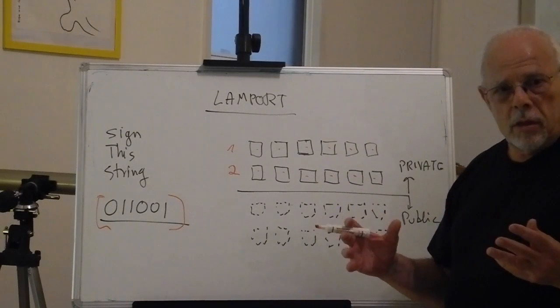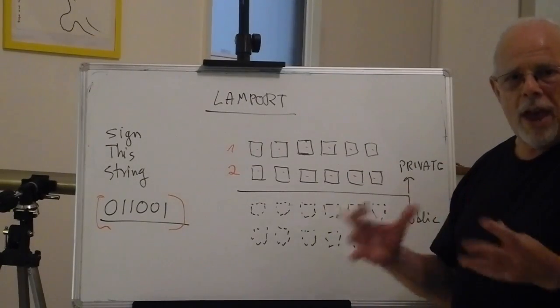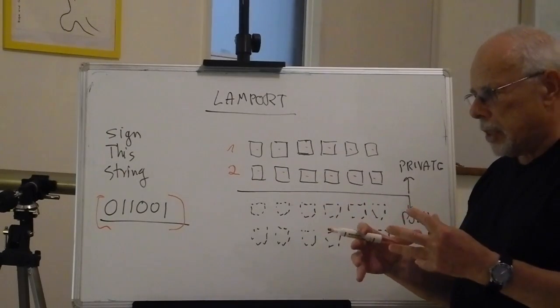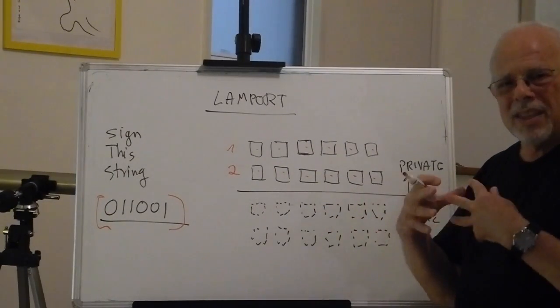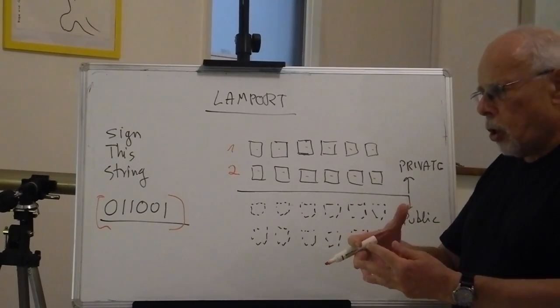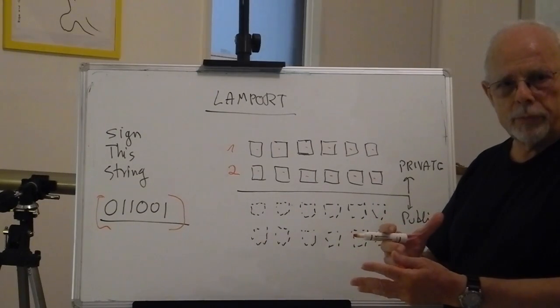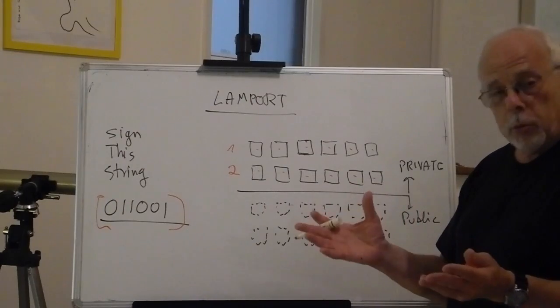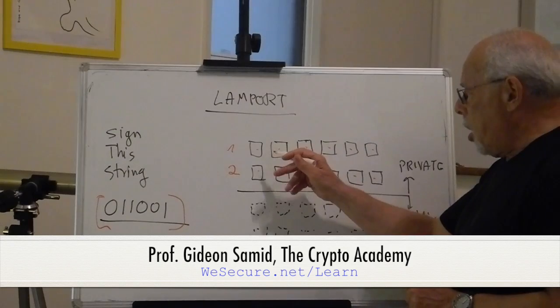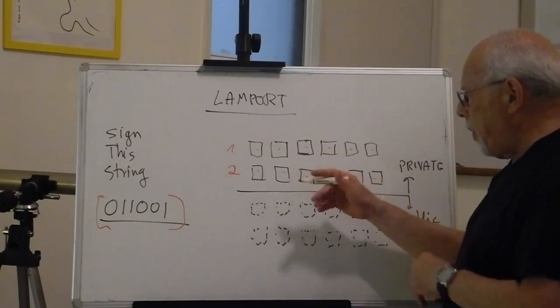And then she will choose any good hash function, which takes a string of bits and represents it with a different string of bits so that the reverse is difficult. There is an issue of how do we know it's difficult, but let's leave it aside for now.